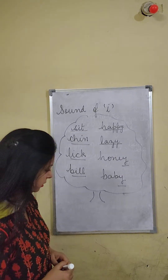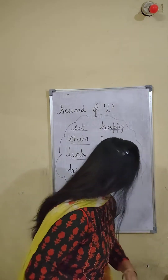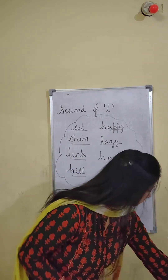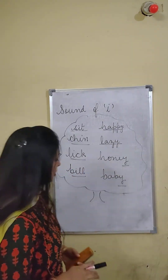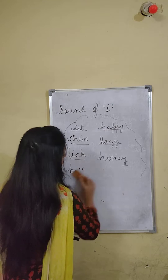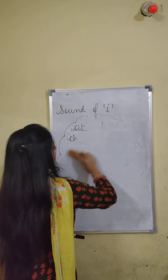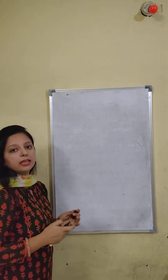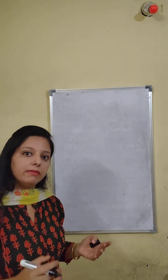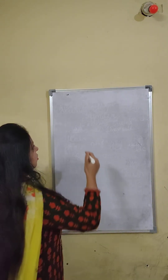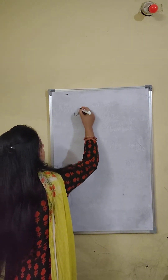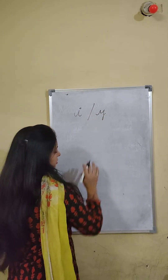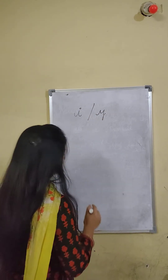Now there are four words written down. You have to fill in either I or Y. You have to see ki kya hai — haan pe I aayega ya Y aayega. You have to fit I or Y. So there are four words.